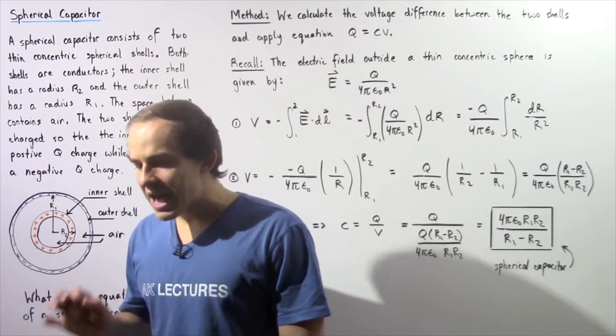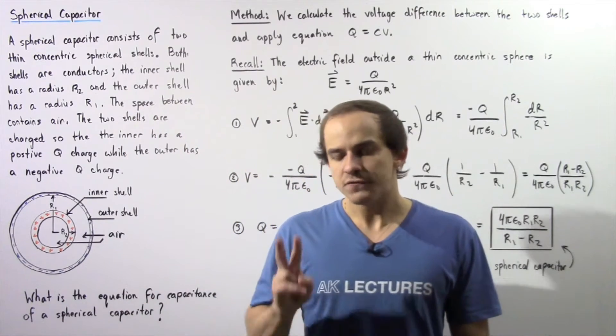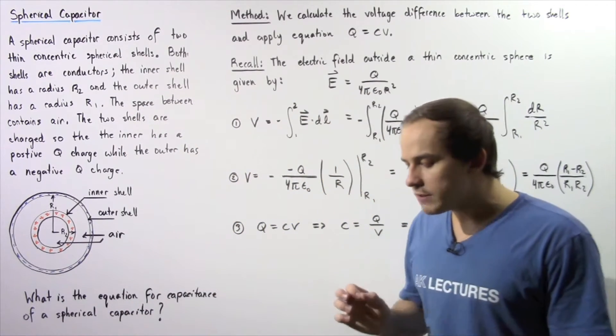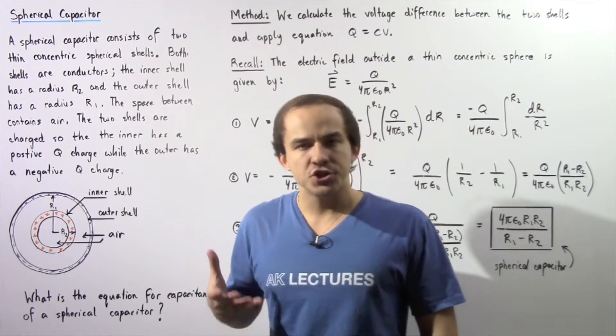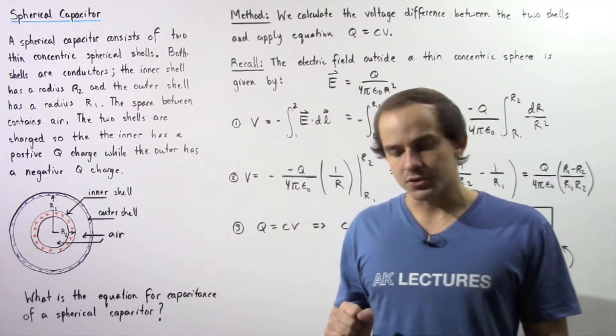A spherical capacitor essentially consists of two thin concentric shells. Each one of these shells is a conductor, so that means all the charge is stored on the surface of the shells.